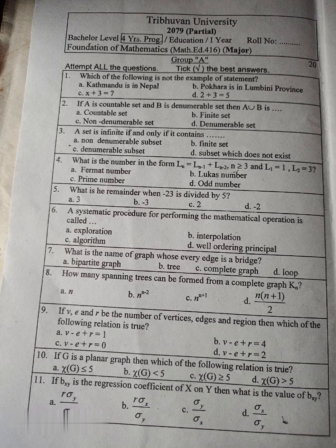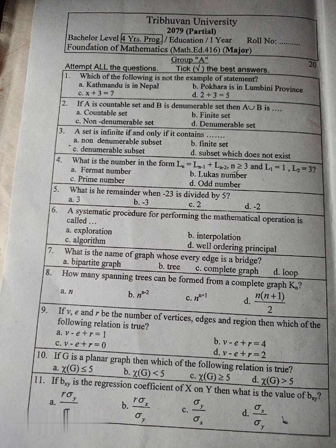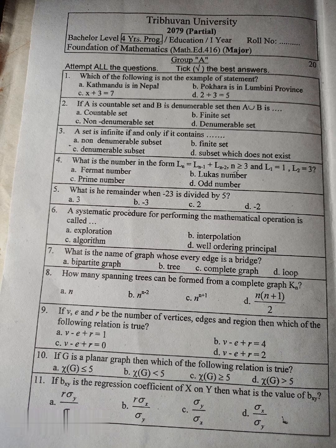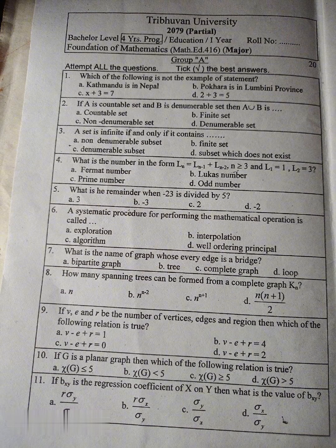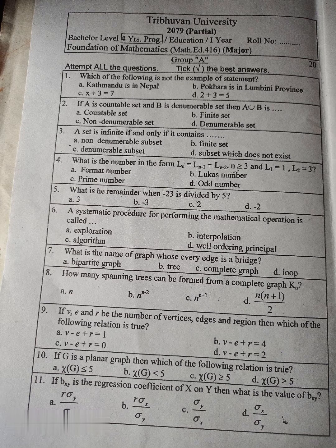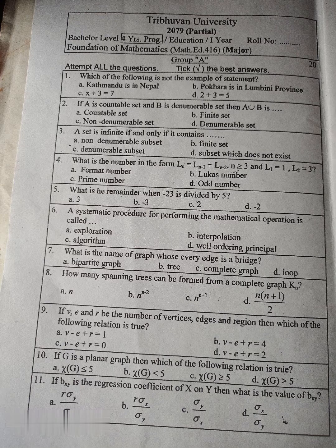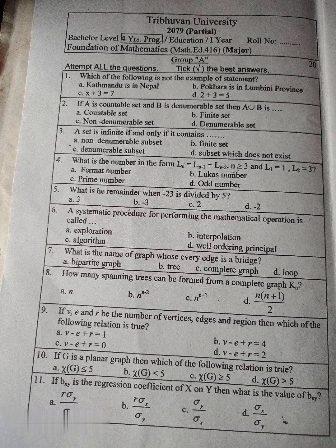Question number 4: What is the number in the form Ln equal to Ln minus 1 plus Ln minus 2, L0 equal to 3 and L1 equal to 1, L2 equal to 3? A. Format number, B. Lucas number, C. Prime number, D. Odd number.